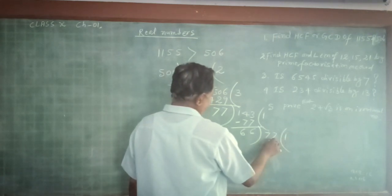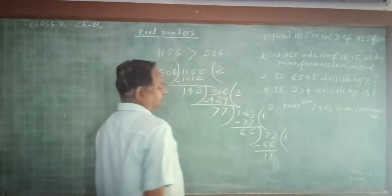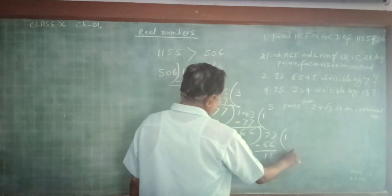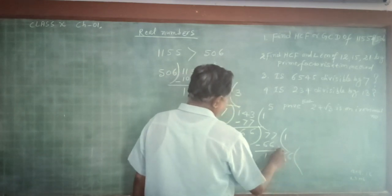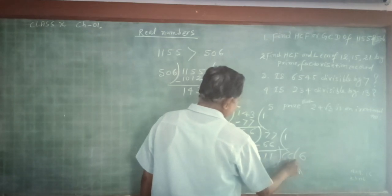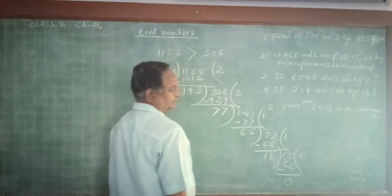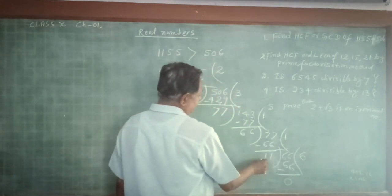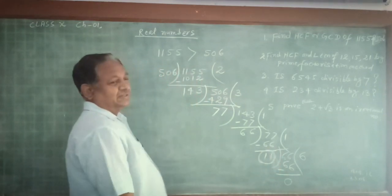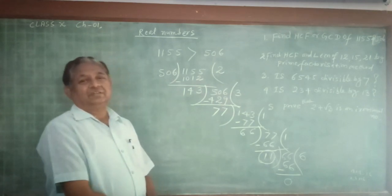One time 66. Remainder is 11. Again, divide 66 by 11. That is 6 times. And the remainder is 0. So this new divisor is the required HCF. This is called the long division method.